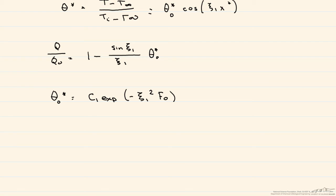So for a cylinder, we write it as theta star is equal now to this theta zero star times the Bessel function of the first kind of this eigenvalue times r star, where r star is that dimensionless radius.